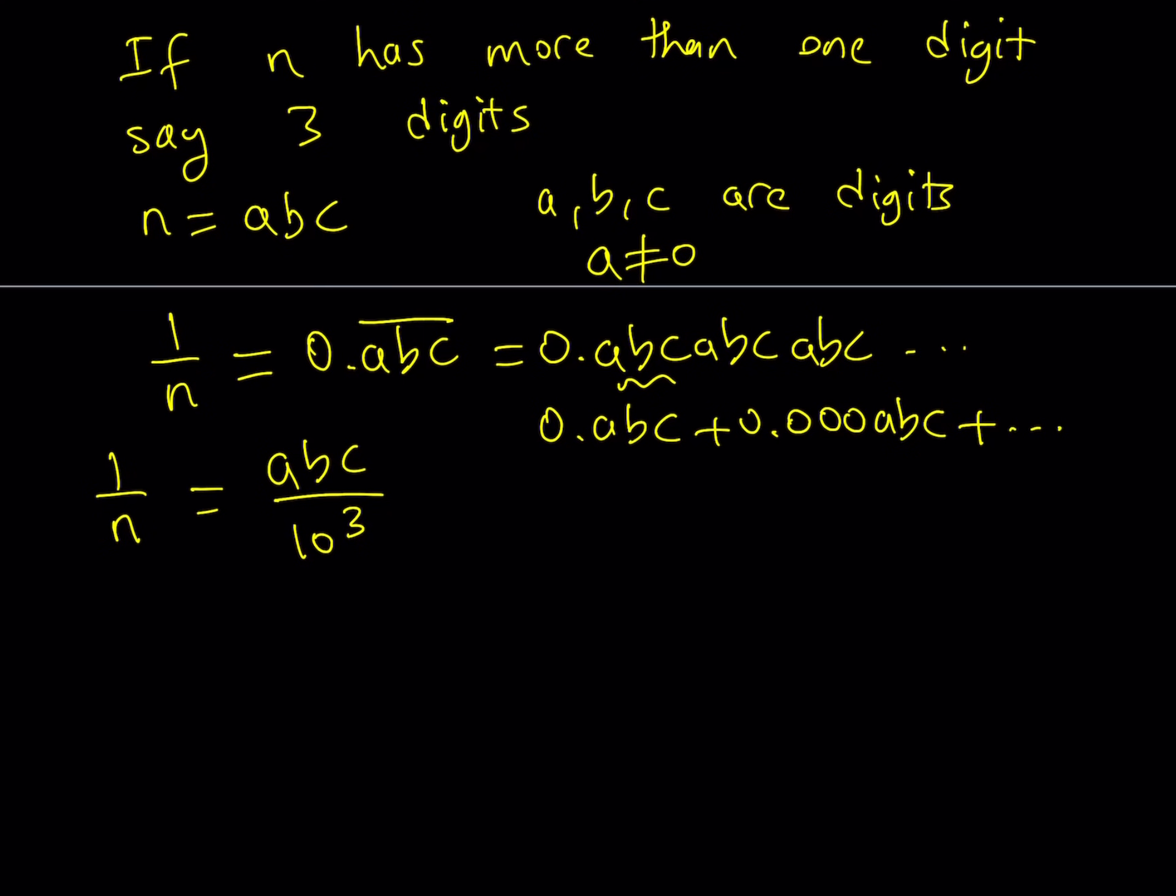So we can write the right hand side as abc over 10 to the third and then the next one is going to be 10 to the 6 because notice that we have six digits to the right of the decimal point and then the next one is going to be the ninth power. So basically we're kind of dealing with 10 to the power multiples of three here.